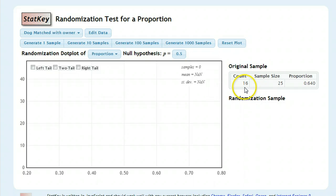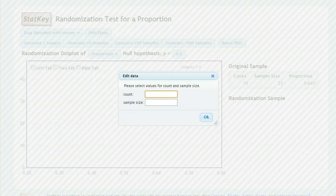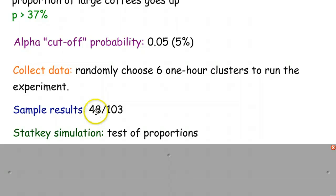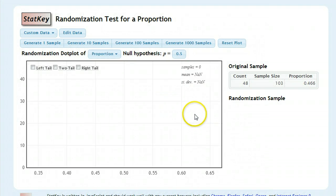The very first thing you're going to want to do is go to Edit Your Data. It's going to ask you for a count and a sample size. The count is how many successes you had, the 48 larges that were purchased, and your sample size was that 103. So, 48 out of 103. I would always recommend doing this part first, just because there's some glitchy things with StatKey. So we type that in.